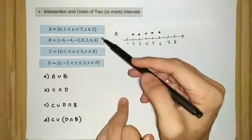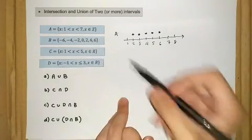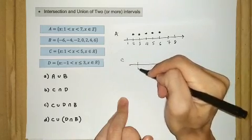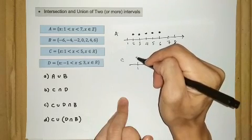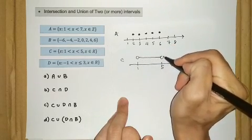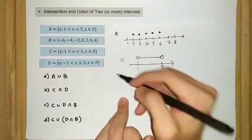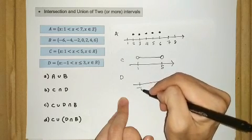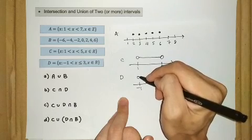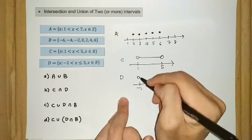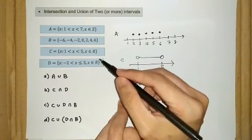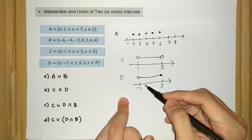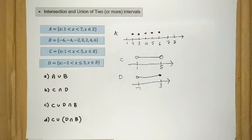Set B is straightforward from its set notation. For set C on the number line, it goes from one to five, with one and five not included — open endpoints. For set D on the number line, it goes from negative one to three, where negative one is not included but three is included. Since these are real numbers, D includes values like negative 0.9, 2.5, and so on.